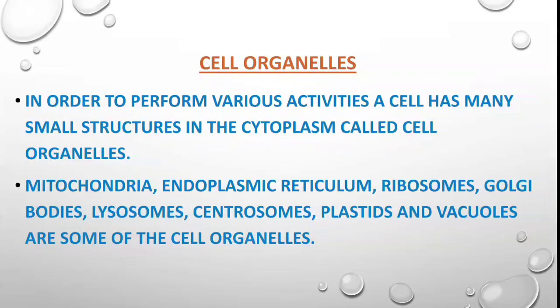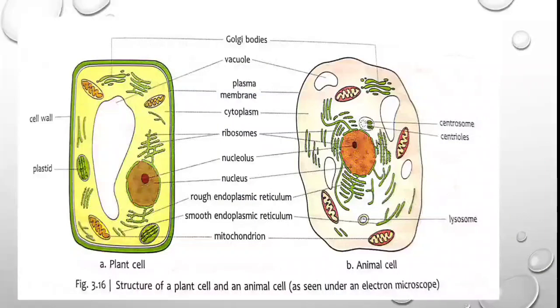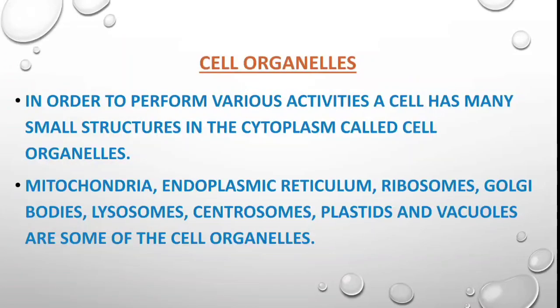Now we will study about cell organelles. Looking at the diagram, you can see the labeled structures: Golgi bodies, vacuole, ribosome, endoplasmic reticulum (rough and smooth), lysosome, and mitochondria. All these structures visible inside the yellow, jelly-like portion of the cytoplasm are called cell organelles. They help the cell perform different kinds of activities.